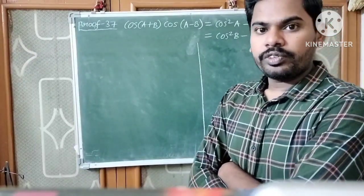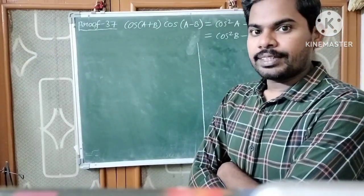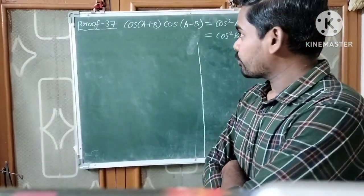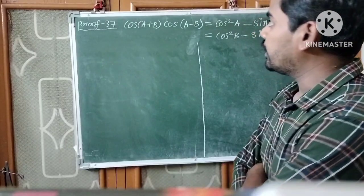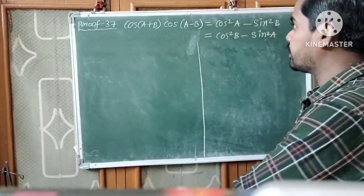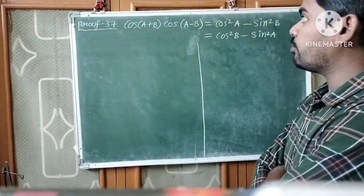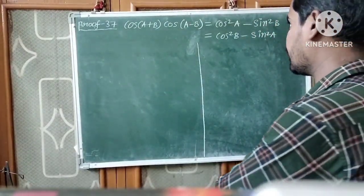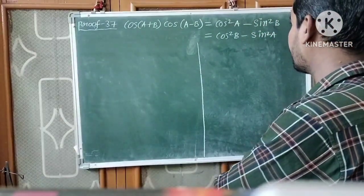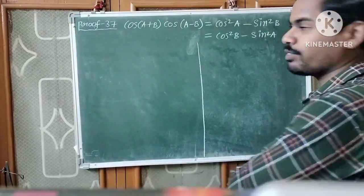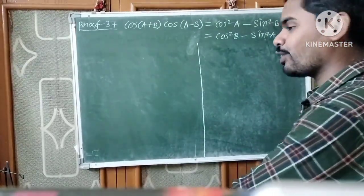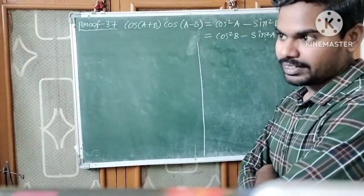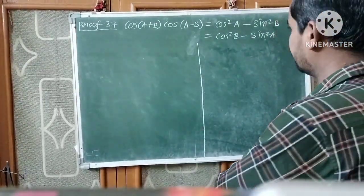Next, proof number 37. Prove that cos(A+B) · cos(A-B) is equal to cos²A minus sin²B, and also equal to cos²B minus sin²A.